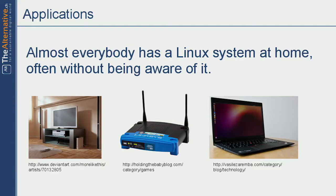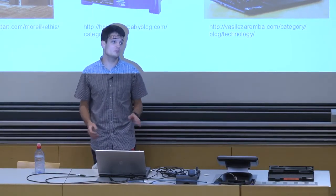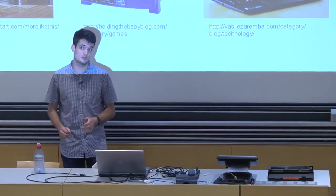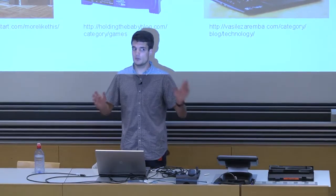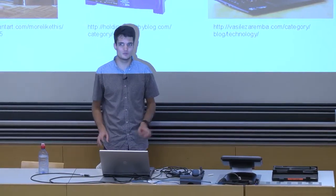Almost everybody also has a Linux system at home. In your TV it's very likely you have some kind of Linux-inspired version or a true Linux system. Or this thing — the WRT54GL — it's a router you can flash with your own personal Linux. The stock version is also Linux-based. Most routers are based on a Linux distro. You can also have Linux on a normal computer like this laptop, which is currently running Ubuntu Linux — the most popular distro.